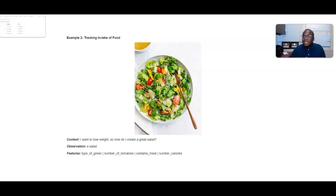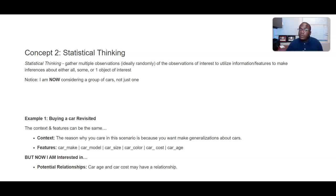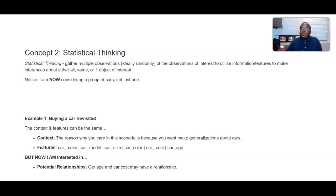With that being the case, we're going to shift to statistical thinking — something that's a little bit different and requires something very, very important. When it comes to statistical thinking, it requires us to gather multiple observations, and ideally those observations need to be random. This is not a stat class, but I'll still mention how important that is. We need our observations to be random, and we're going to utilize that information to make generalizations about all or some of those observations.